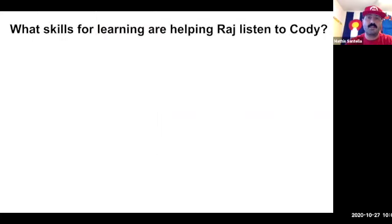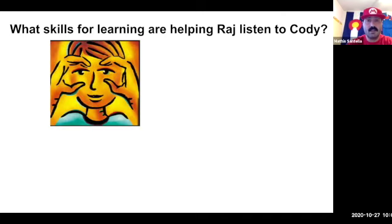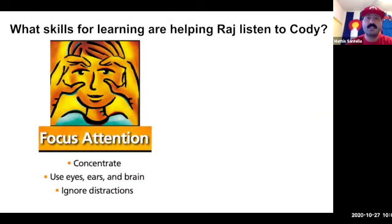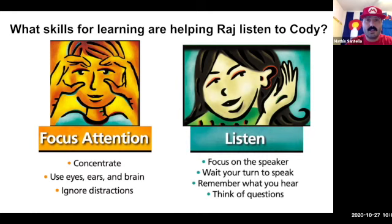Think back to some skills that we learned way back when we first started Second Step this year. What skills for learning are helping Raj listen to Cody? He's focusing his attention on Cody — concentrating on what Cody is saying and on Cody's body language. He's using his eyes, his ears, and his brain to focus, and he's ignoring distractions. There's one other skill he's using — listening. He's focused on the speaker, he's waiting his turn to speak, he's remembering what he hears, and he's thinking of questions to ask Cody to help better understand how Cody is feeling.